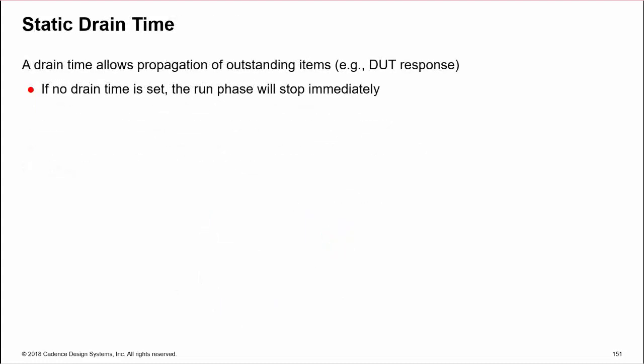The purpose of drain time is to allow data items to propagate to the DUT and, for example, be captured at the output and sent to a scoreboard. The default drain time is zero, so if we don't specify one, the run phase stops immediately when the last objection is dropped.